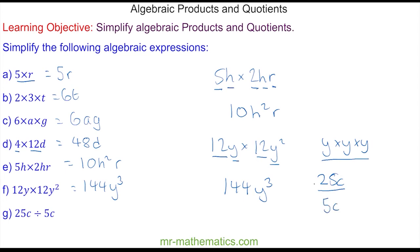We can do the division. 25 divided by 5, which is 5. And we can simplify by dividing both by c. And these will cancel. So we're left with 5.